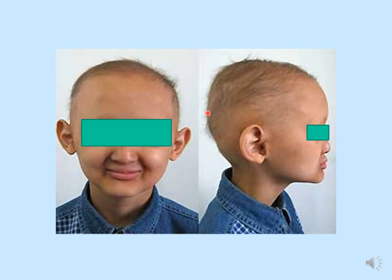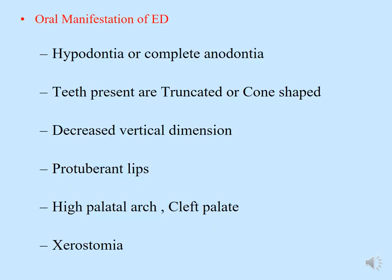Here is a clinical photograph of a patient with ectodermal dysplasia. The most identifiable features are sparse hair and specific facial features. Oral manifestations of ectodermal dysplasia include hypodontia or complete anodontia. The teeth that are present are either truncated or cone-shaped. There is decreased vertical dimension because of missing teeth, giving the patient an older appearance. With decreased vertical dimension, the lips appear protuberant. Patients have high-arched palate, sometimes cleft palate, and xerostomia — because salivary glands also develop from the ectoderm.